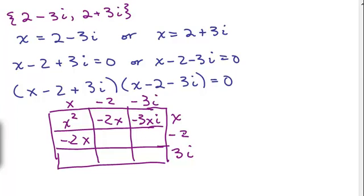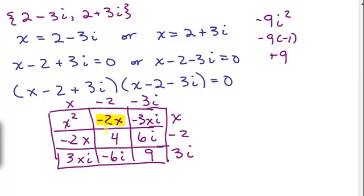This is a -2x. Notice I get the same thing. x times -2 is -2x. -2 times -2, that's 4. -3i times -2 is 6i. X times 3i is 3xi or 3ix, depending how you want to write that. -2 times 3i is -6i. And -3i times 3i is -9i². Let's write that over here. -9i² would be -9 times -1 or plus 9. So I'm just going to write that's going to be a positive 9. Then we have to add all those like terms.